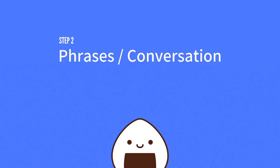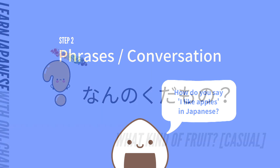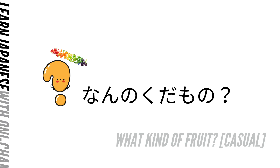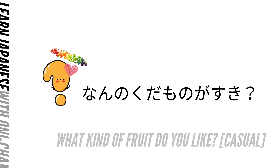Good job! Step 2 — Phrases and Conversation. How do you say 'I like apples' in Japanese? Let's get started! 何の果物? 何の果物? What kind of fruit do you like?